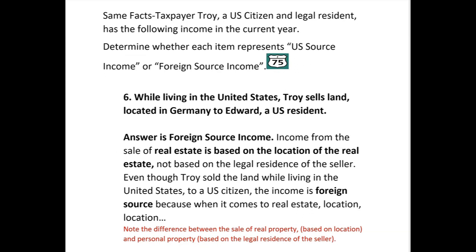Note the key difference: sale of real property is based on the location of the property, while personal property is based on the legal residence of the seller. You might have wondered after two questions on personal property whether it would be different for real estate — and now you know it's a big difference. The exam could ask exactly that kind of question. You either know the rule or you don't: real estate is based on location of the property. For number six, the answer is foreign source income because the real estate is located in Germany.